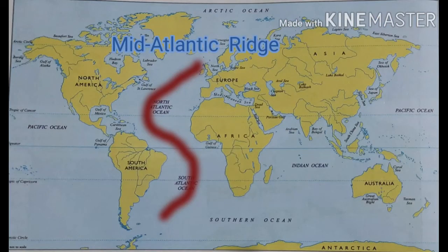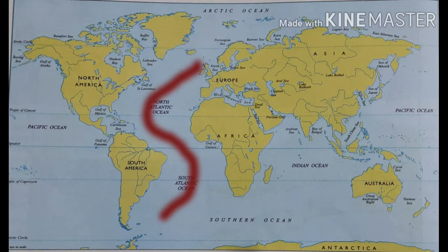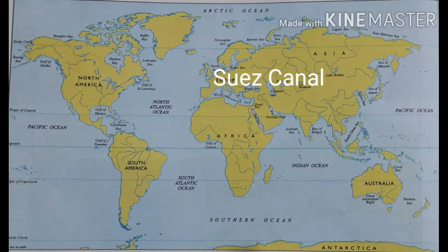The Mid-Atlantic Ridge is the longest mountain chain that runs under the Atlantic waters from north to south. The Suez Canal was built to connect the Indian Ocean and the Mediterranean Sea. This canal shortened the trade route between the Atlantic Ocean and Indian Ocean, meaning it connected Europe and the Asian continent.